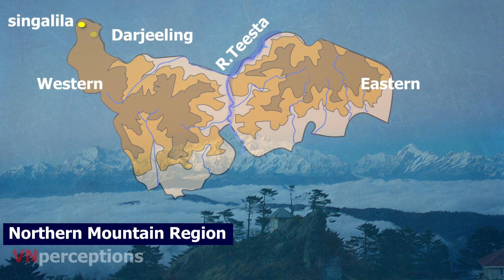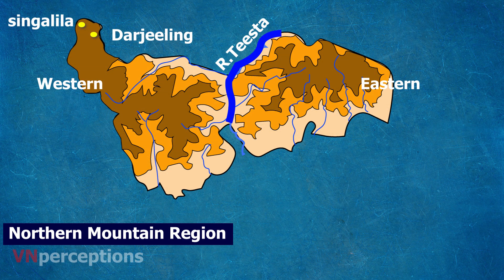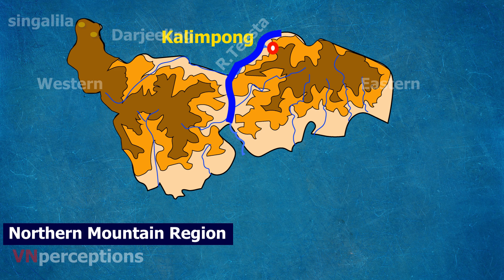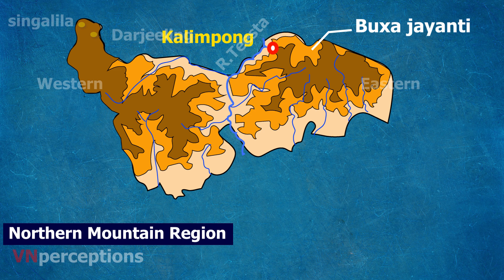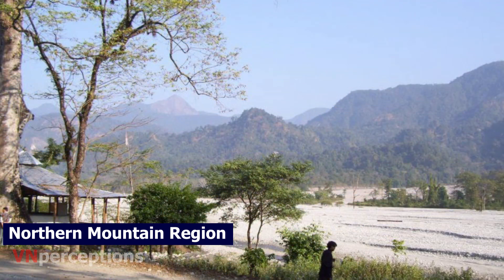The eastern part of the Tista river is lower than the western part. The famous Kalimpong town is situated in this region. Few hills are also found in the Dooars region at the foot of the Himalayas. Some remnants of the Shivalik mountain range can be seen in the Jalpaiguri district, where they are known as the Baikunthapur hills. This area is transformed into discontinuous hilly topography with highest rainfall.